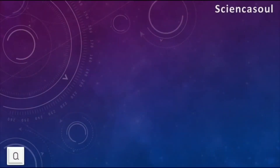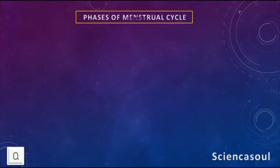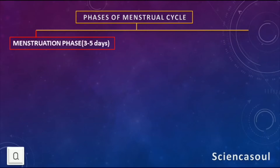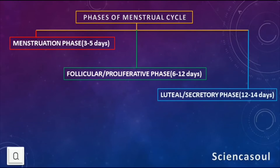Today we will be discussing the phases of the menstrual cycle. The menstrual cycle has three phases: the first phase is the menstruation phase, which lasts for three to five days; the second phase is the follicular phase, which lasts for six to twelve days; and the third phase is the luteal or secretory phase, which lasts for twelve to fourteen days.